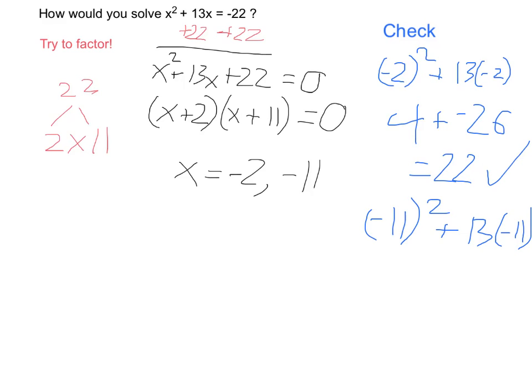Negative 11 squared, similarly, is going to be a positive number. In this case, 121. 13 times negative 11 is equal to negative 143. And when I add them together, again, I am going to get negative 22. Oh, just notice this was a negative 22 as well.